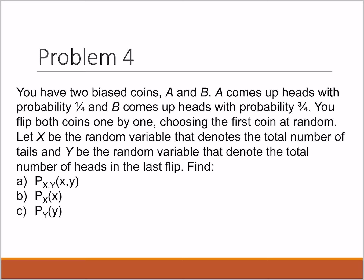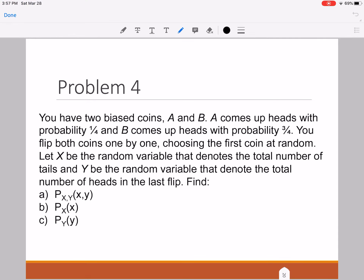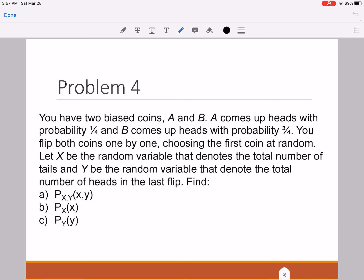So here in this problem, you have two biased coins A and B. You don't know which is which, so you flip them both one by one, choosing the first coin at random. For this problem, we need to define X as a random variable that denotes the total number of tails for the entire experiment, and Y is the total number of heads in the last flip. We need to devise the joint PMF and find the marginal PMFs of X and Y.